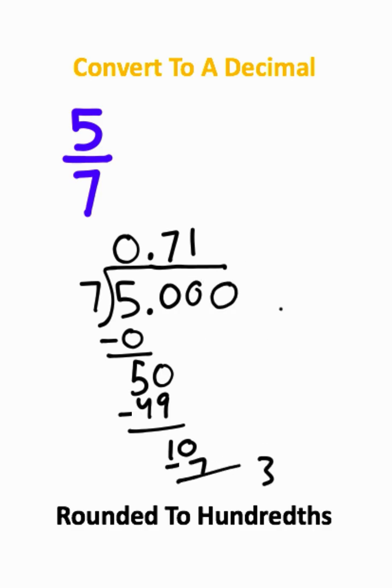Now I'll go ahead and bring down another 0 here. 7 can divide into 30 4 times. 7 times 4 is 28. And if I subtract these two numbers, I get 2.